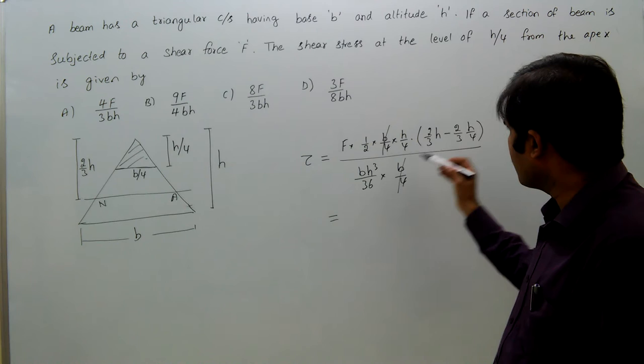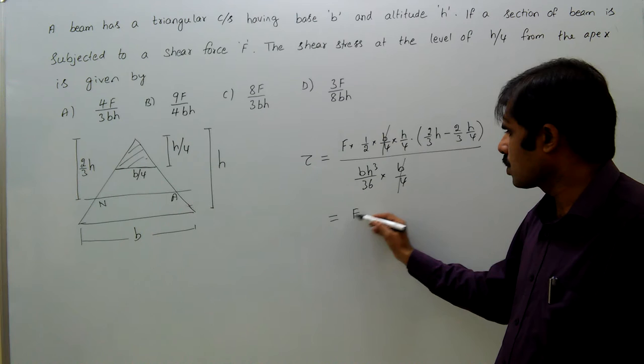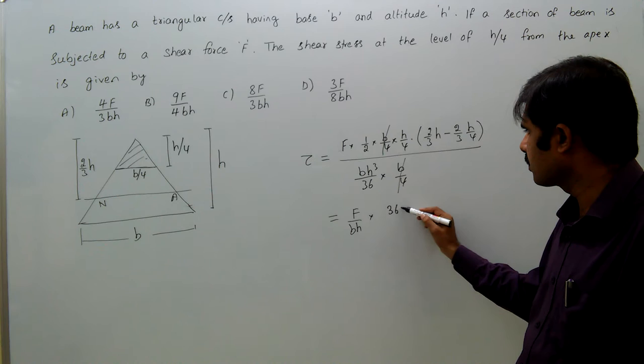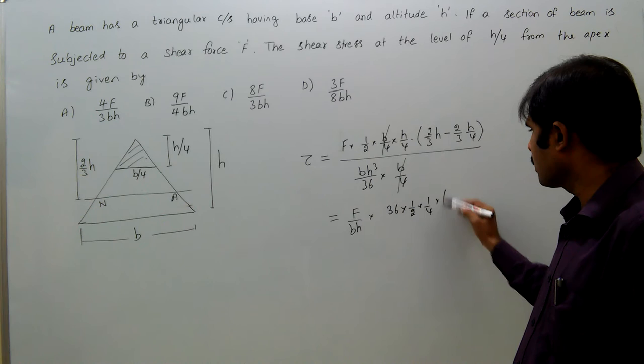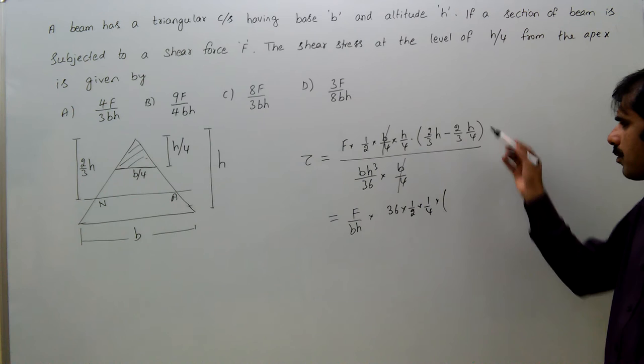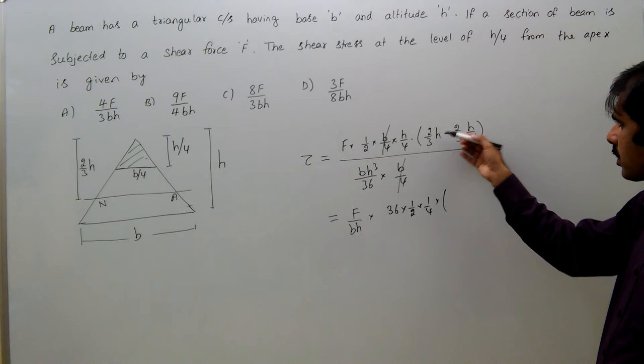That is equal to F by BH into 36 into 1 by 2 into 1 by 4 into 2 third minus 2 third of 1 by 4, that means 3 fourth of 2 by 3. So 1 minus 1 fourth is 3 by 4. So 3 gets cancelled.